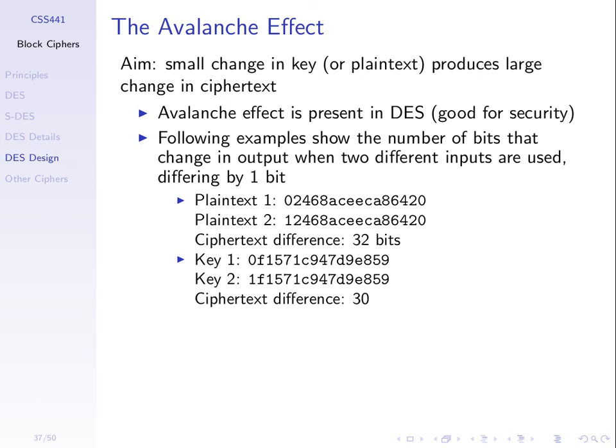The avalanche effect: how do we know if the algorithm produces a good, strong ciphertext? One test is checking for the avalanche effect. Like an avalanche where a small rock at the top of a mountain knocks others, causing a massive effect at the bottom — one small change leads to a large change. For a cipher, if you make a small change in the key or the plaintext, the resulting ciphertext should be significantly different. If the cipher has the avalanche effect, it's considered well-designed; if not, it's considered bad.